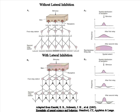Lateral inhibition occurs when there is a mutual inhibition between receptors responding to stimuli in adjacent parts of the receptive field. Whatever the modality, the effect of lateral inhibition is to increase the contrast of edges by causing an enhanced differential in the response to the stimulus on either side of the edge.